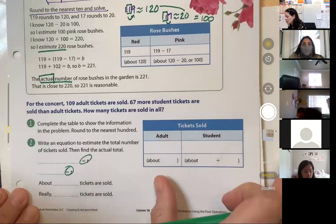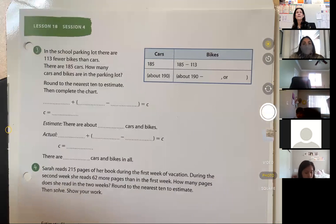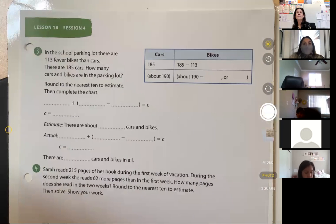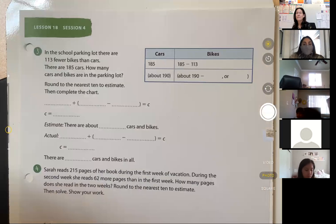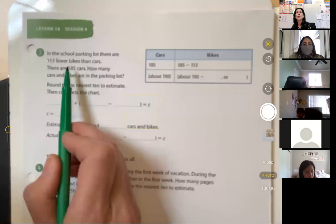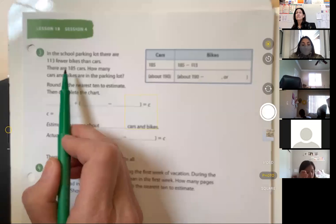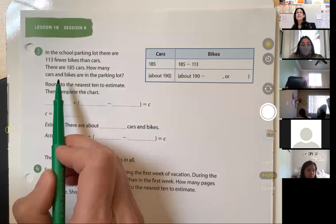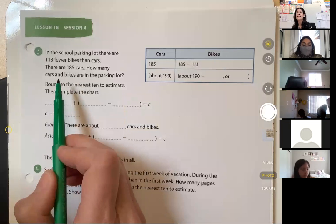On page 408, you're going to see more of the same type of organizer. But this one, it's going to be about cars and bikes. Cars and bikes. Same thing. In the school parking lot, there are 113 fewer bikes than cars. There are 185 cars. How many cars and bikes are in the parking lot? And then you round to the nearest 10 to estimate.